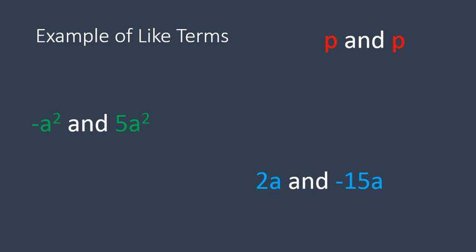2a and negative 15a. Again, the numbers don't really matter. It's just our variable. In this case, a is exactly the same. 7b and negative b. The variable of b is exactly the same.